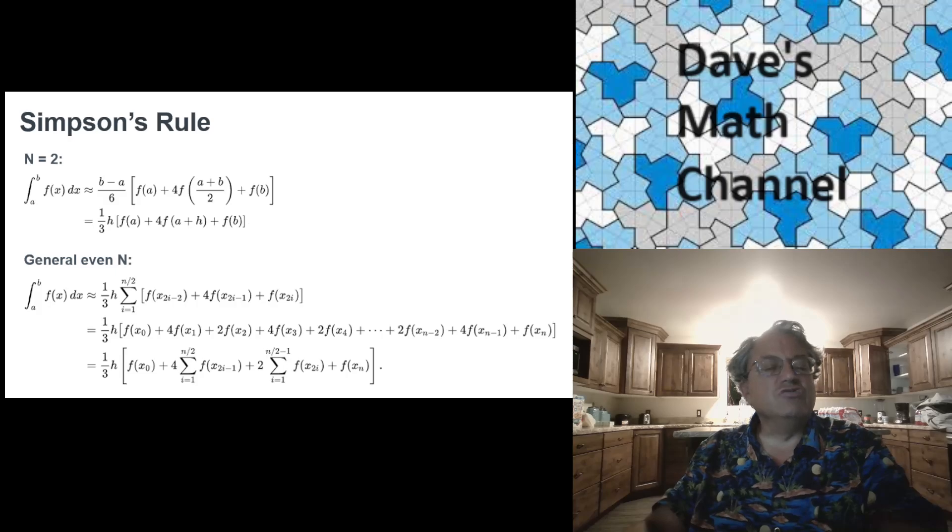And here's the formula for n equals 2. The formula for n equals 2 is pretty simple. You just take b minus a over 6. And then what you do inside, you take f of a and f of b, those are the endpoints. And then it turns out that you have to multiply the midpoint by 4. So you take 4 f of a plus b over 2. That's just the midpoint.